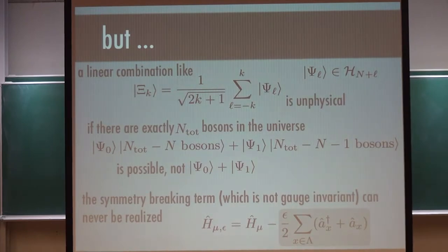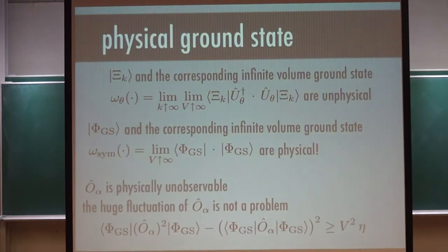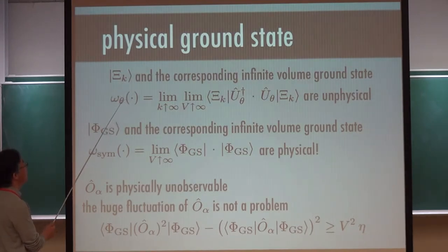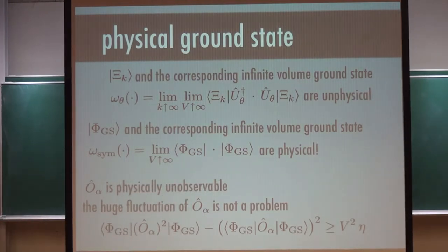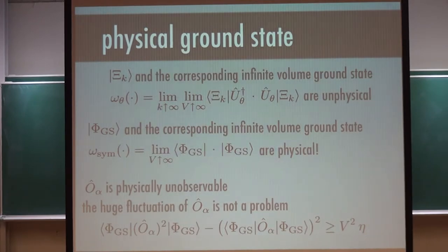So this tells you that this state is not physical. Comparing the ground states: the ground state which breaks the symmetry is not physical because it breaks U1 symmetry, while the ground state which was unphysical for the Heisenberg antiferromagnet case is now physical for bosons, because it preserves the symmetry. About the puzzle of large fluctuation — O alpha exhibits huge fluctuation, which was unphysical for the Heisenberg antiferromagnet case. But in this case, O is not a physically observable, so it doesn't matter physically.